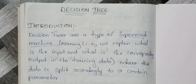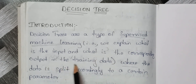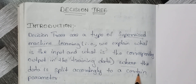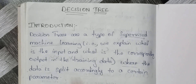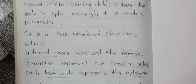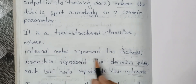Now you can define decision tree — that is very important, it is a key term. Decision trees are a type of supervised machine learning where we explain what is the input and what is the corresponding output in the training data, and where the data is split according to a certain parameter.